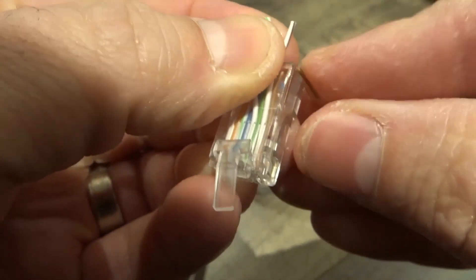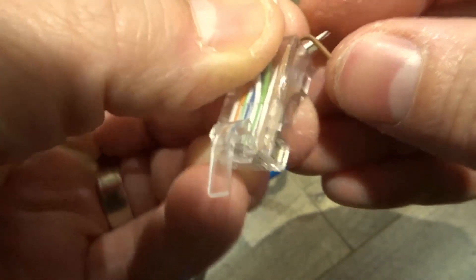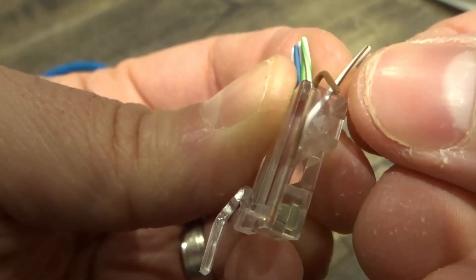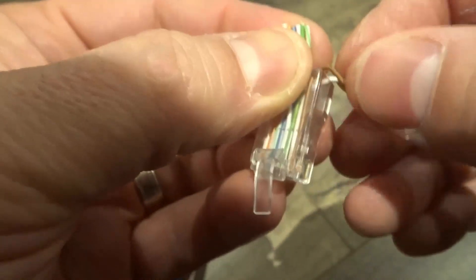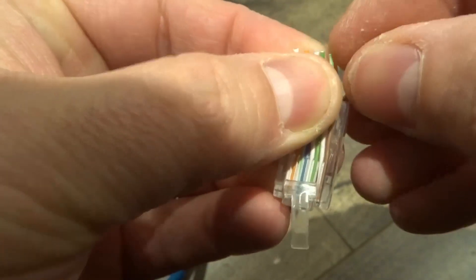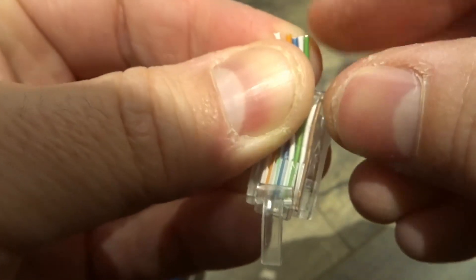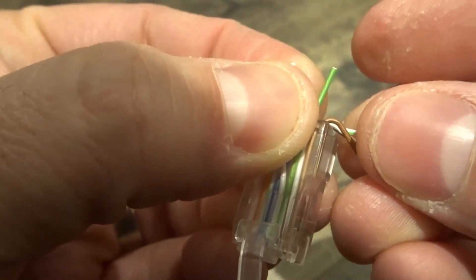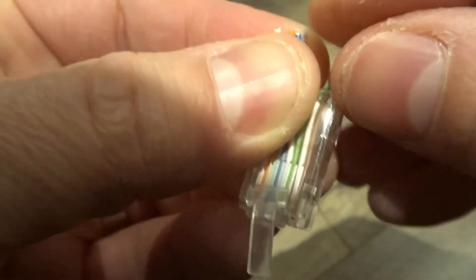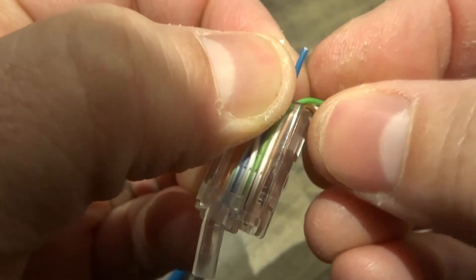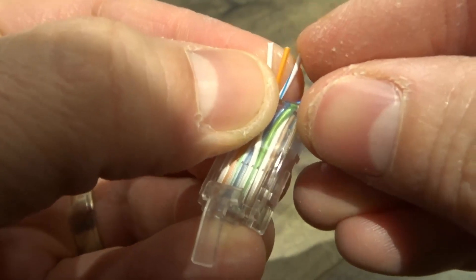We're gonna start off with this one all the way over here, the uninsulated one. That's the first one. Then we have the second one which looks like it's a white wire with a little black stripe on it. The third one looks like it's white with a green stripe on it. The fourth one looks like it's a green insulated wire. The fifth one is a blue insulated wire.